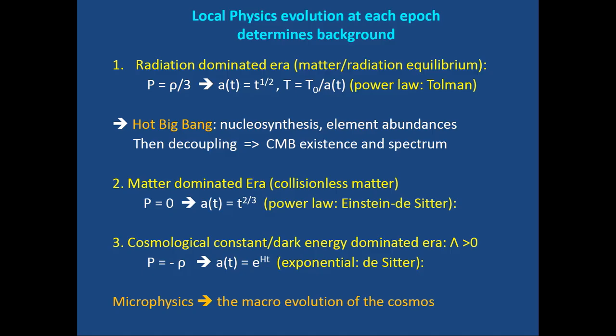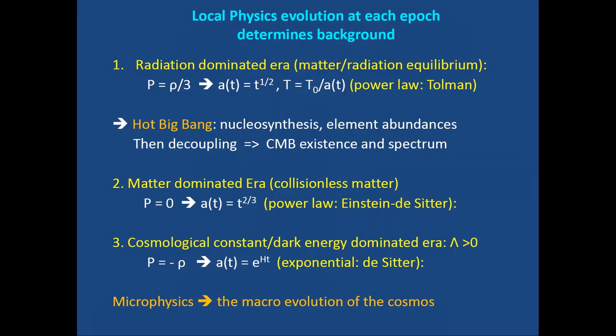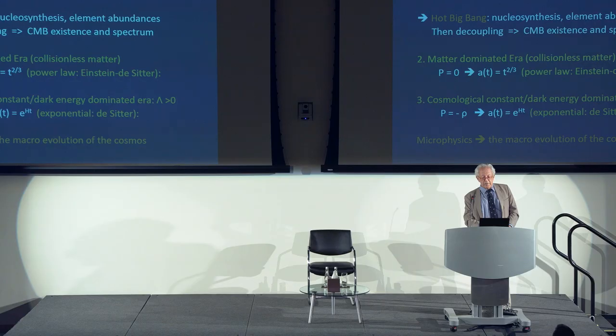Local physics at each epoch determines the background model's expansion. There are three main eras. First, a radiation-dominated era: as we go back in time it gets hotter, radiation dominates, matter and radiation reach thermal equilibrium, pressure equals one-third the energy density, and the expansion rate scales as the square root of time. Temperature decays inversely with the scale factor. This is Tolman's solution from the 1930s, governing the hot Big Bang era when nucleosynthesis of primordial elements took place.